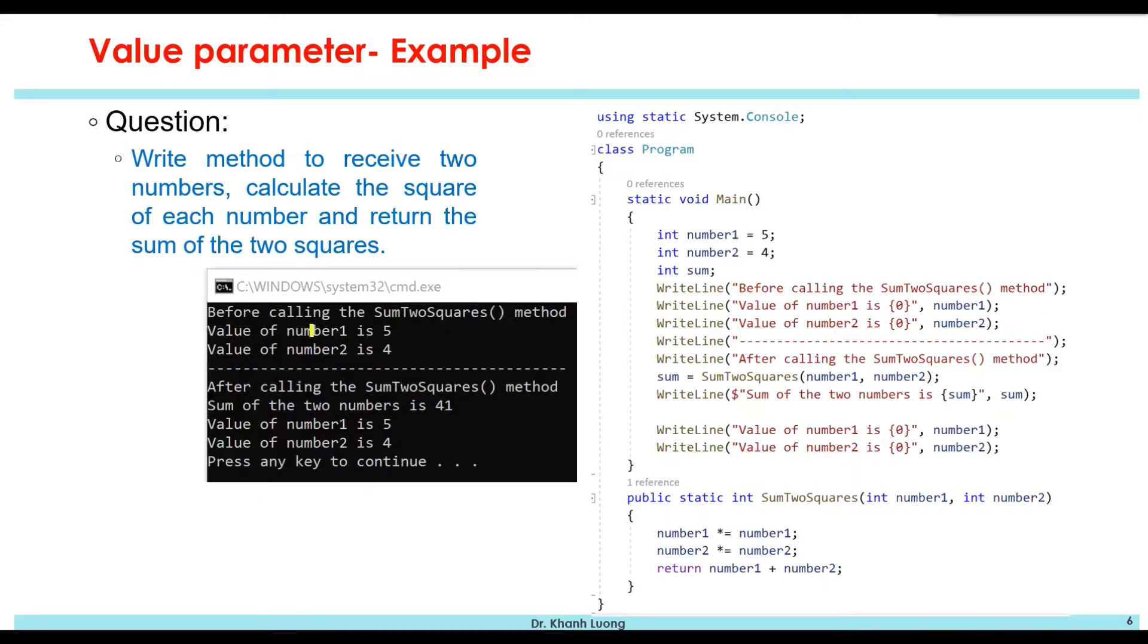So the value of number1 and number2 before calling the method is 5 and 4. And after calling the method, the sum of the two numbers is 41, and the value of number1 is still 5, the value of number2 is still 4.